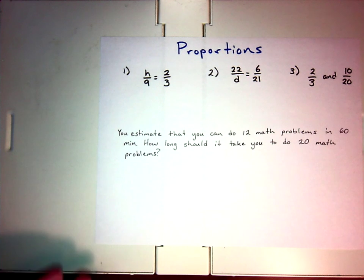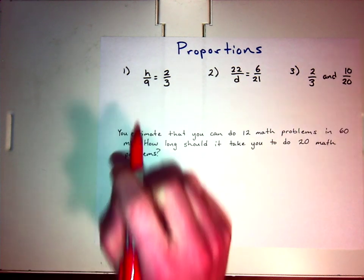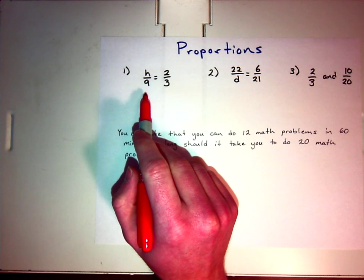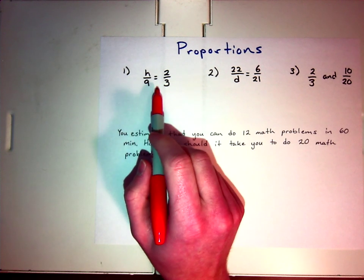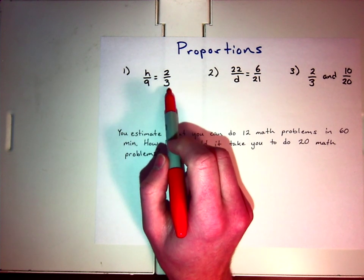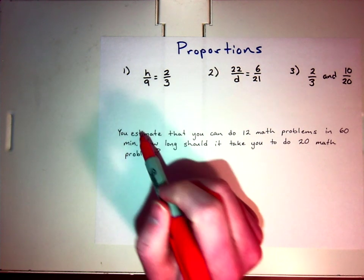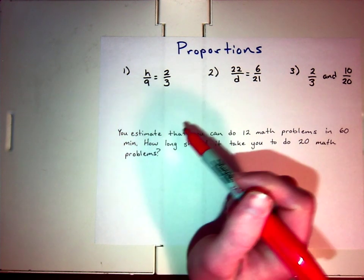In some of these examples, you're going to look at problems like this, and it's going to have a missing value. For this one, hopefully you've been working with equivalent fractions long enough to know that what number would be equal to two-thirds that has nine as the denominator. Hopefully, you already look at that and say, oh, that's six-ninths. H equals six, easy peasy.